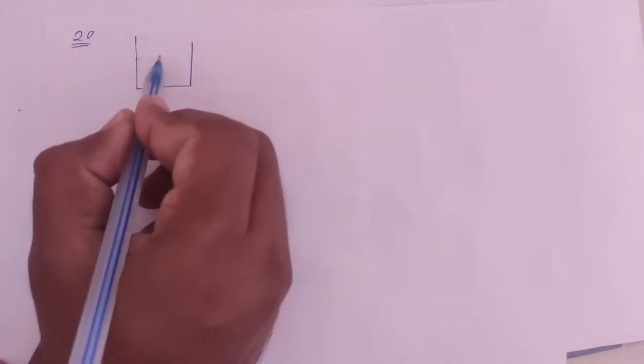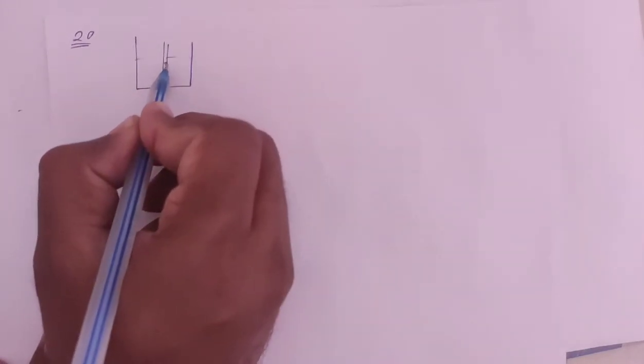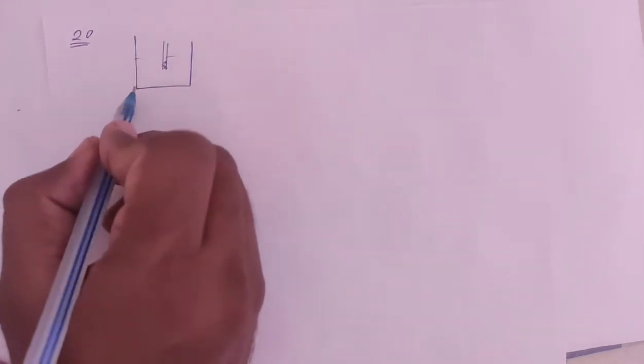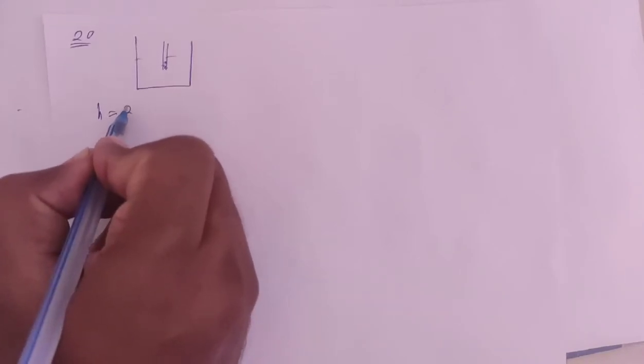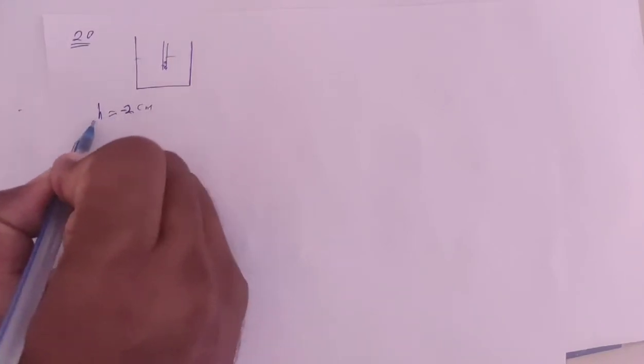When capillary tube is placed in mercury, mercury level decreases by 2 cm. So the height here will be 2 cm less, so I'll write it in negative as minus 2 cm.